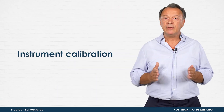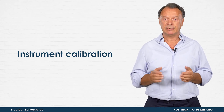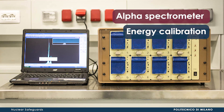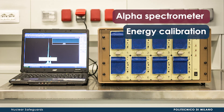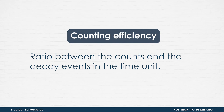Whatever radiometric technique is selected, in order to quantitatively assess the radionuclide concentration in the sample, the instrument has to be calibrated using suitable certified radioactive standard sources. For example, the alpha spectrometer needs energy calibration by means of a certified source containing several alpha emitters. Standard alpha sources with known activities are used to evaluate the counting efficiency at different energies, defined as the ratio between the counts and decay events per unit time.